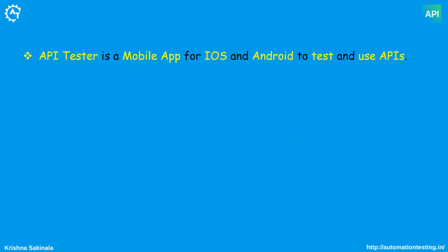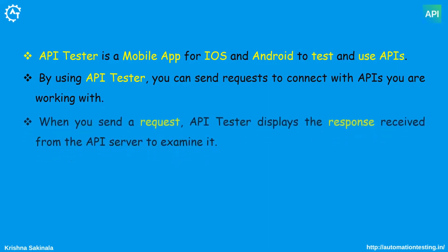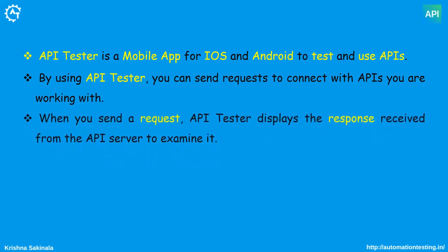With the help of API Tester, you can test your APIs on mobile — both iOS and Android. By using API Tester, you can send a request to connect with the APIs you are working with. When you send a request, API Tester displays the response received from the API server, then you can examine it or verify it.